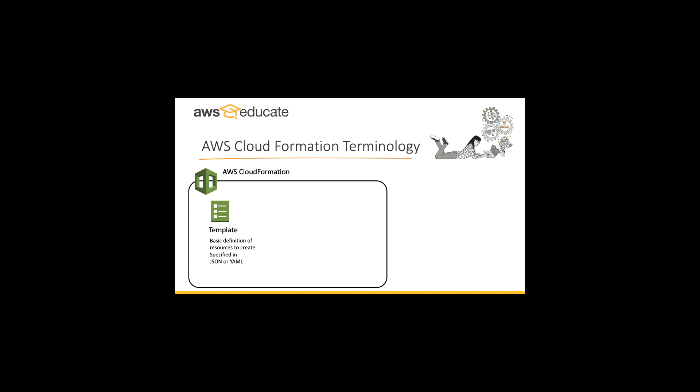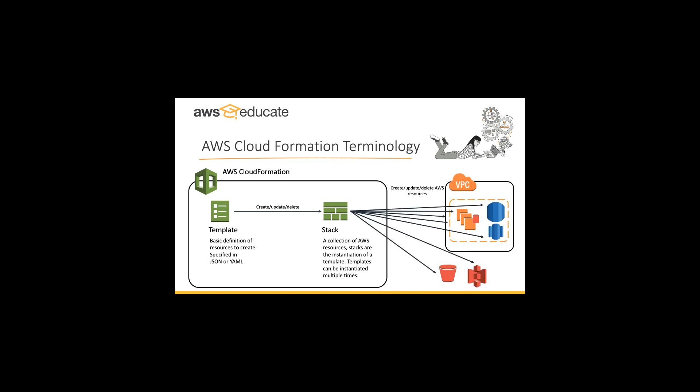Let's look at some of the terminology used for CloudFormation. We start with a template, which is a basic definition of resources written in JSON or YAML. Then you create, update, and delete a stack. A stack is a collection of resources — it's the instantiation of a template you've created. Templates can be instantiated multiple times, and what you end up with is a whole range of resources being provided and automated through the whole process.